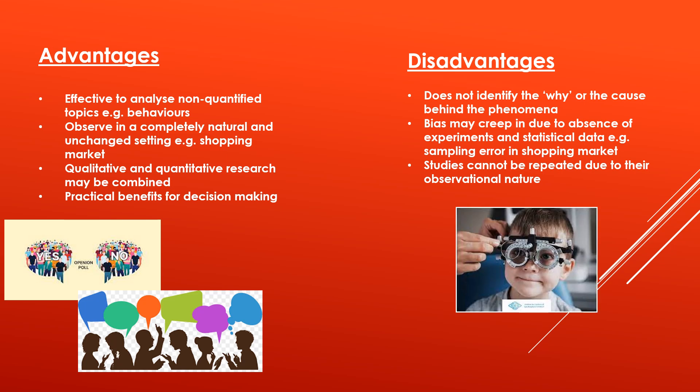Descriptive studies are not helpful in identifying the cause behind a described phenomenon. For example, if you are studying whether myopia occurs in children under five years old due to excessive iPad use, you are only observing a particular group — creating a sampling error. Bias can creep in due to the absence of statistical or numerical data, since observation can be affected by the researcher's perspective. However, bias occurs in every kind of research, so it should not be too concerning.